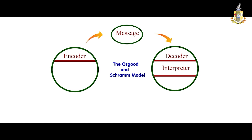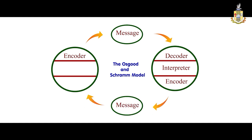After interpretation, the receiver sends the message — that is, the receiver gives feedback to the sender. So the decoder becomes the encoder and the encoder becomes the decoder, and the interpretation starts. This way communication goes on, so this model is called the Circular Model of Communication.